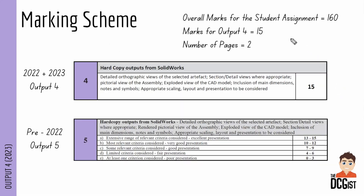Looking at the marking scheme, Output 4 is worth 15 marks, the same as it was in the past, so the correction criteria won't be too dissimilar. It is going to be two pages, still the same as before, so these 15 marks are split over those two pages. The criteria range from an extensive range of relevant criteria considered with excellent presentation, all the way down to at least one criteria considered with poor presentation. We'll be looking at how to maximize those marks as much as we can.